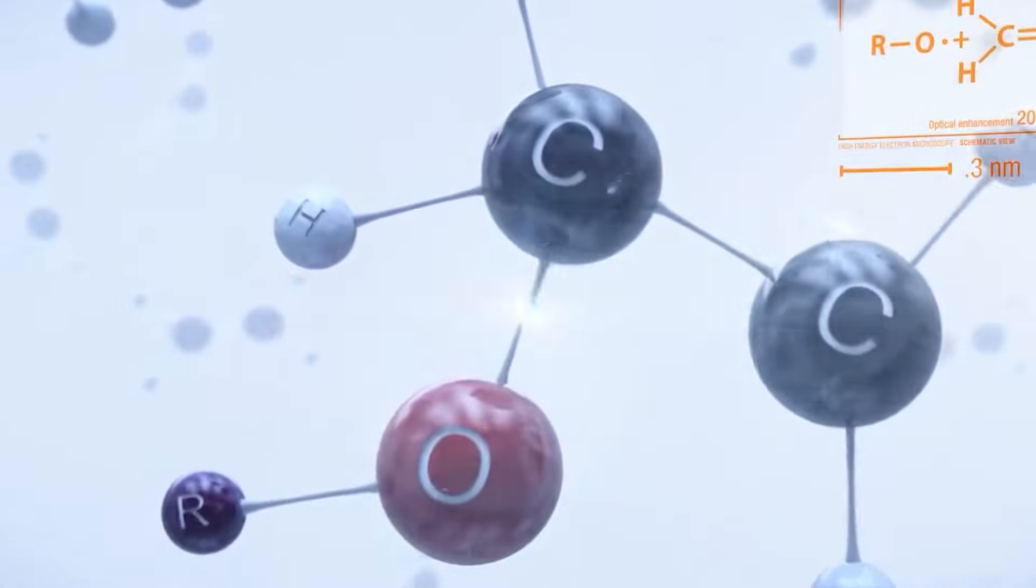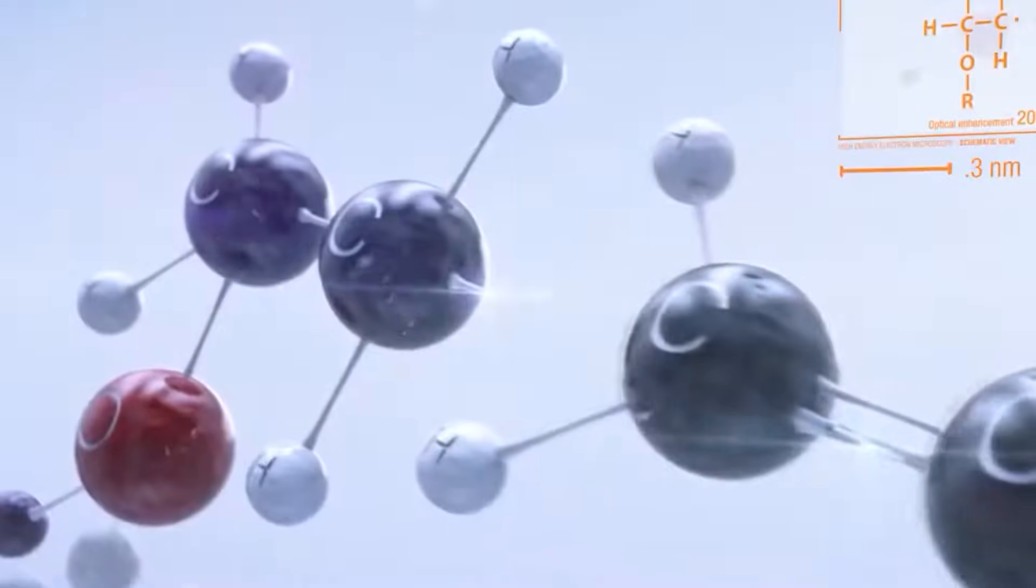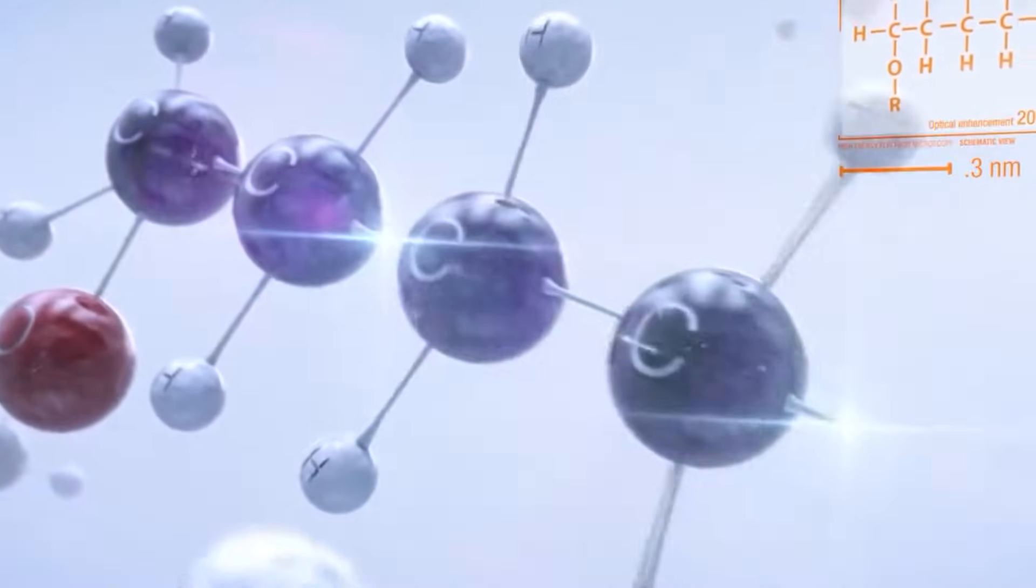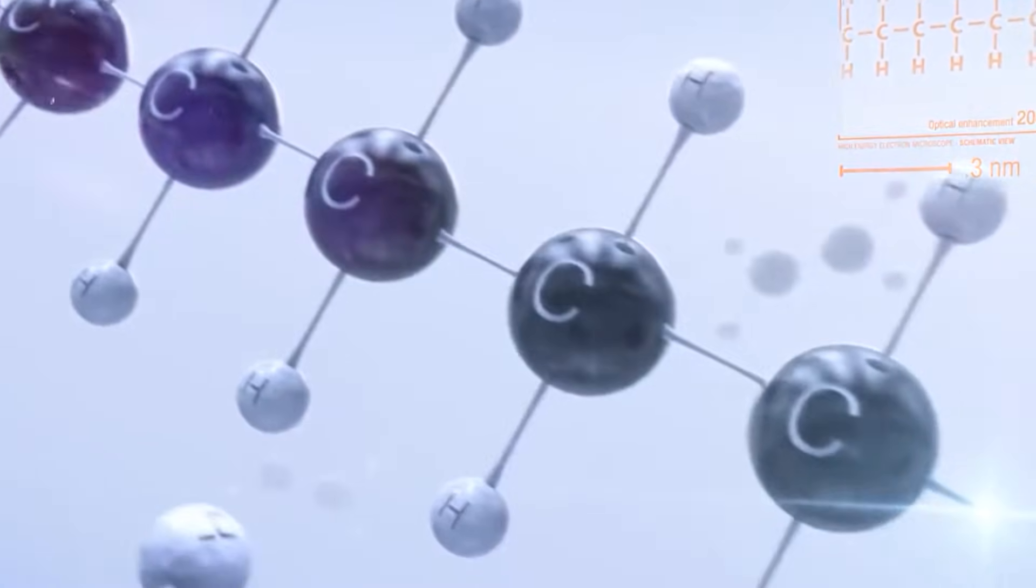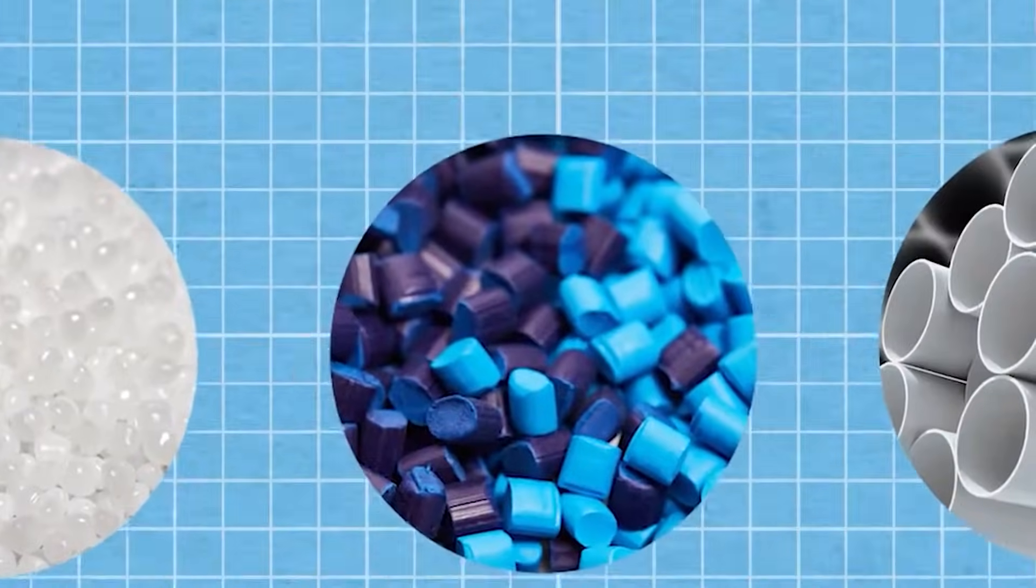After that, the monomers of ethylene and propylene that have been cracked are gathered together and used to prepare for the polymerization process. Addition polymerization and condensation polymerization are the two primary processes that are utilized in the process of polymerization, which is the fundamental step in the production of plastics.